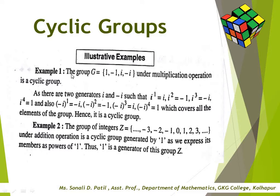First example: the group G = {1, -1, i, -i} under multiplication is a cyclic group with two generators, i and -i. Here i is the complex unit such that i¹ = i, i² = -1, i³ = -i, i⁴ = 1. Also, (-i)¹ = -i, (-i)² = -1, (-i)³ = i, (-i)⁴ = 1, which covers all elements of the group. Hence it is a cyclic group.